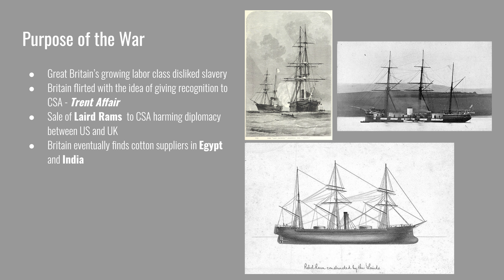Britain first flirted with the idea of recognizing the Confederate States of America in the Trent Affair — an incident in which two Confederate diplomats were taken off a British vessel, called the Trent, by the Union Navy. Great Britain became very angry with the United States for abducting these two diplomats from a British vessel, so the United States had to return the diplomats to the Confederacy. Additionally, British builders were initially hired to make ships for the Confederate Navy. The Confederacy had a contract to buy ironclad rams from a British firm owned by the Laird family — ships that were heavily fortified on the sides and steam-powered.